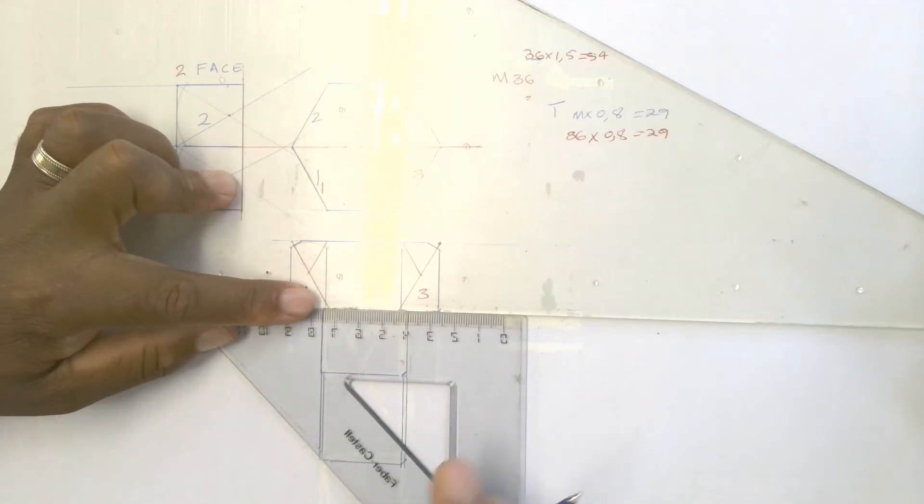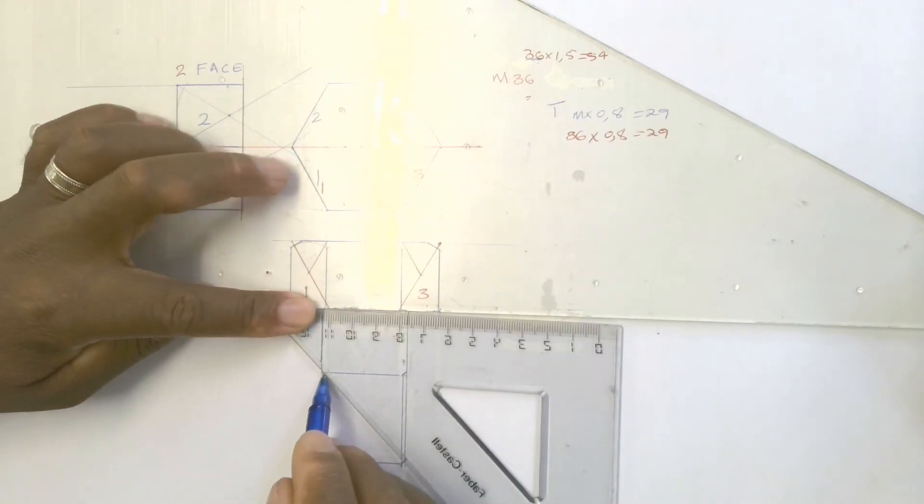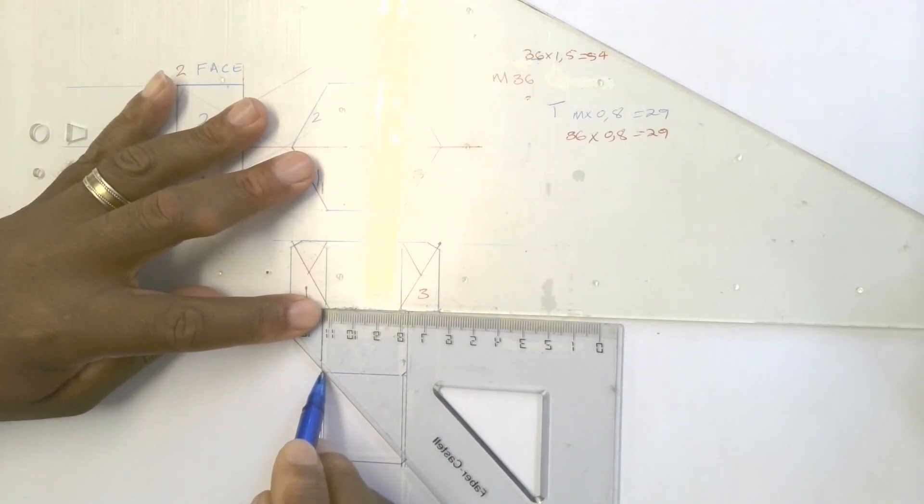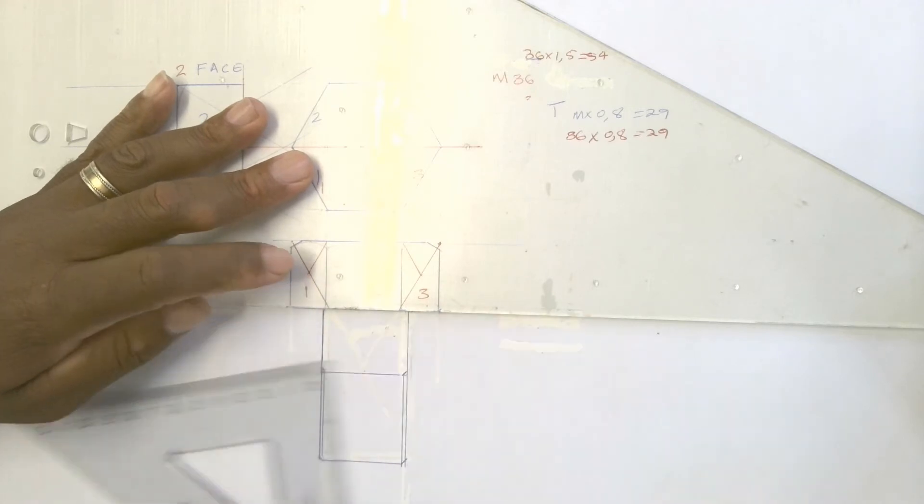Here likewise, it starts from the inside of the line, goes 45 degrees, and that's your chamfer. Likewise on top, it starts from the inside of the line, goes 45 degrees. That indicates the end of your threads.